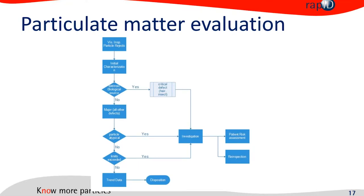How do we do that? We have the visual inspection particle rejects, and after initial characterization we ask: is it an extrinsic biological source — the most critical defect — which would be insect parts or hair? If so, you start the investigation right away. If not, it's still a major defect. You then need to know if the particle is atypical, whether you've exceeded limits, and if so, you start an investigation, do a risk assessment, and may trigger re-inspection of the entire lot.